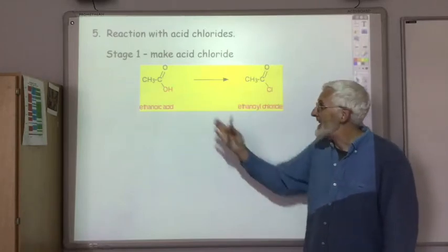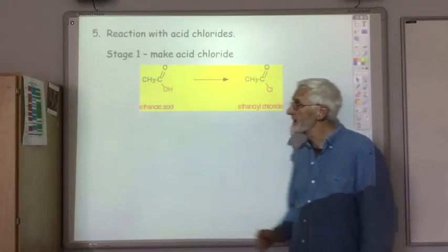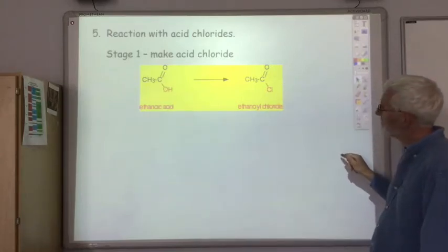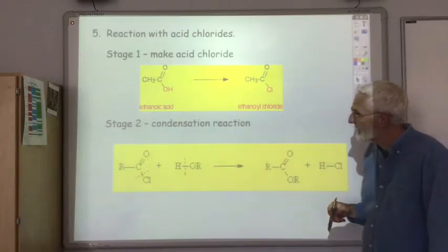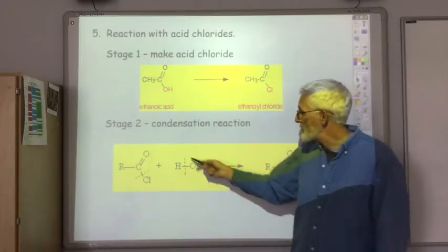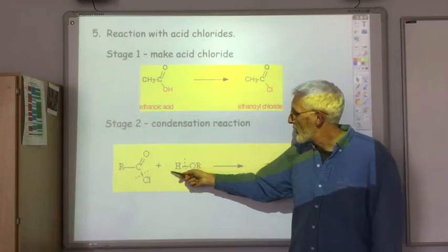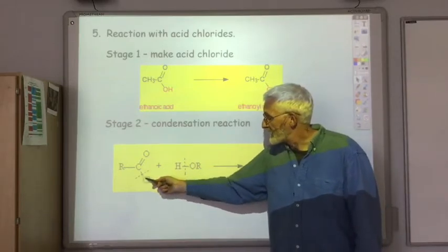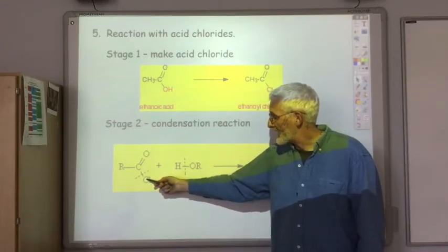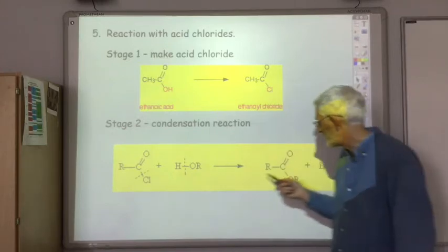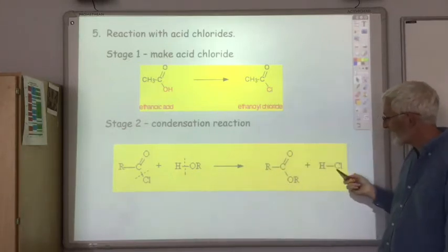So we use that instead of ethanoic acid for our condensation reaction to make an ester. In this case, again, we lose the H from the alcohol. But we lose the Cl from the acid chloride. So we produce our ester plus hydrochloric acid.